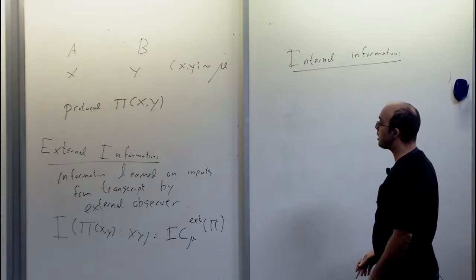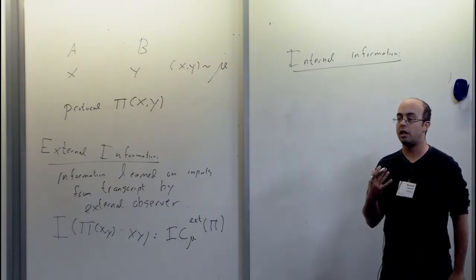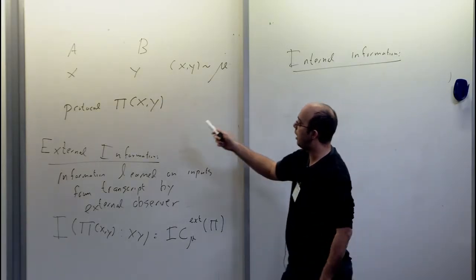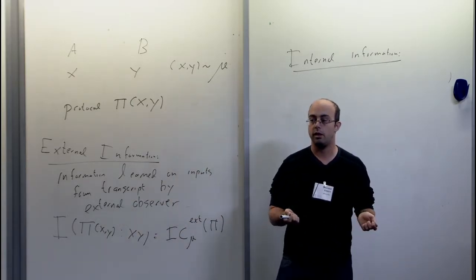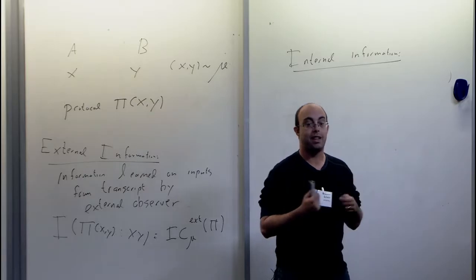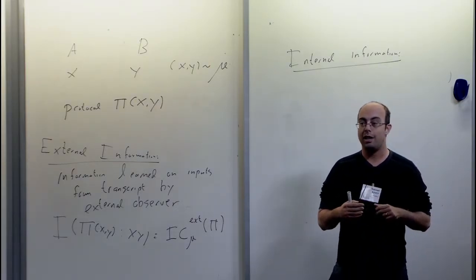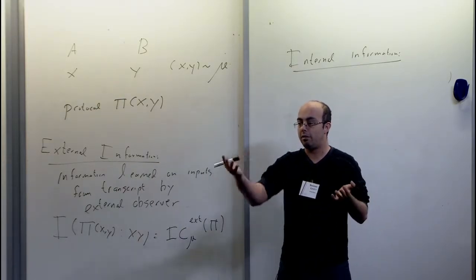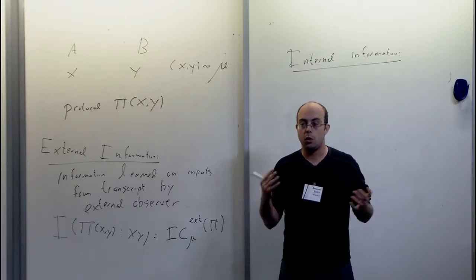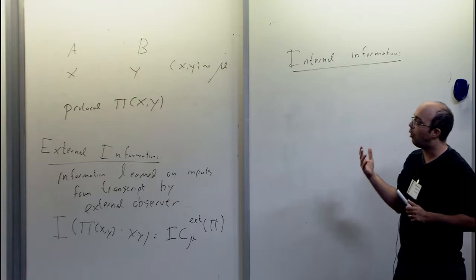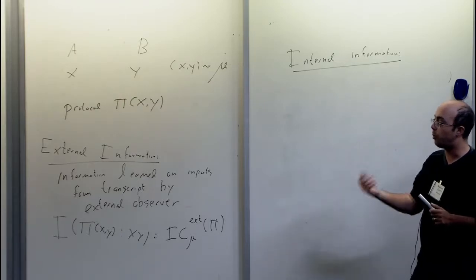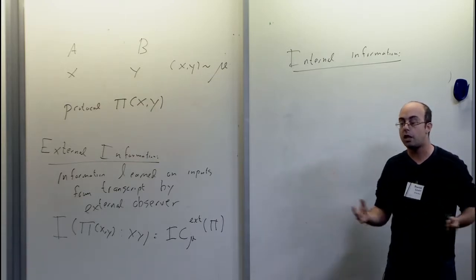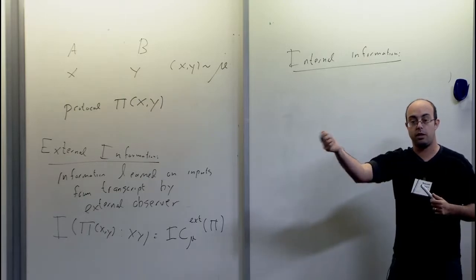The other notion is internal information: how much does each player learn about the other player's input? These can differ — for example, if X and Y are each individually uniform but always equal, the external observer learns a lot, but the players already know everything from their own input and need zero communication. So for the goal of simulating or compressing interactive protocols, internal information is the more interesting notion.